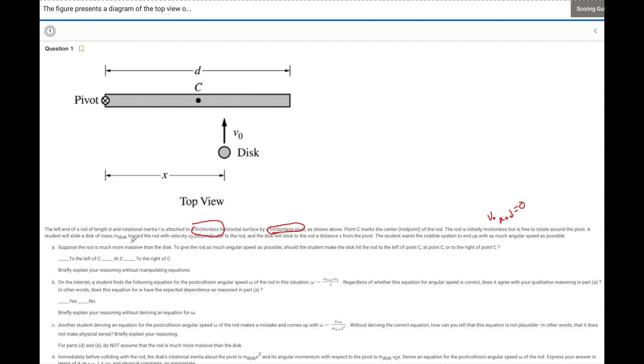A student will slide a disc of some mass. They say that the mass of this is just M disc and a velocity V naught. And that's going to be a linear velocity. But remember, because it is still at some R from the pivot point, although this disc is not rotating, it still has an angular momentum. Super important to remember. And then the disc is going to stick to the rod. That's going to be very important moving forward.